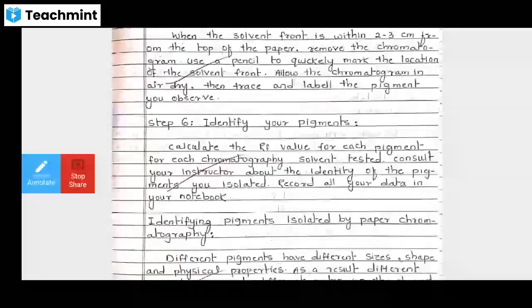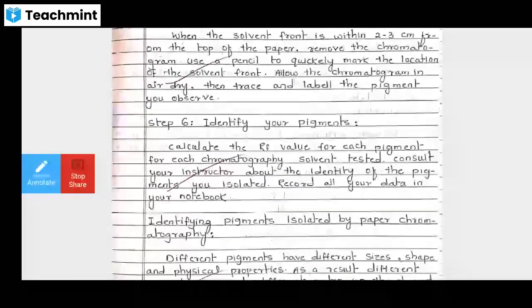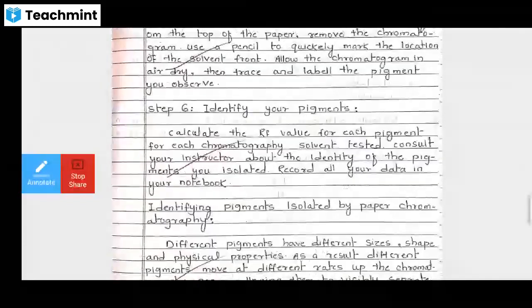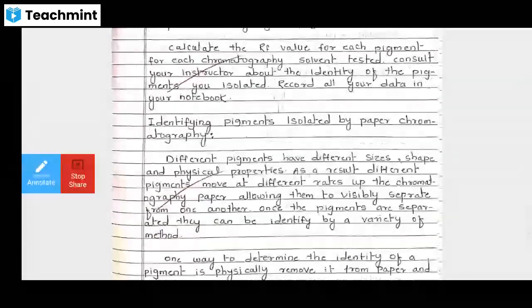Install chromatogram and record your results. When the solvent front is within 2-3 cm from the top of the paper, remove it. The pigment will run, leaving the entire area. Mark where the solvent front reached. The different colors will be left by the pigments at different distances on the slide.